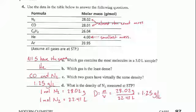Now, D is going to ask you for a calculation. What is the density of N2 measured at STP? So that's standard temperature and pressure. And remember, at standard temperature and pressure, one mole of any gas takes up 22.41 liters.